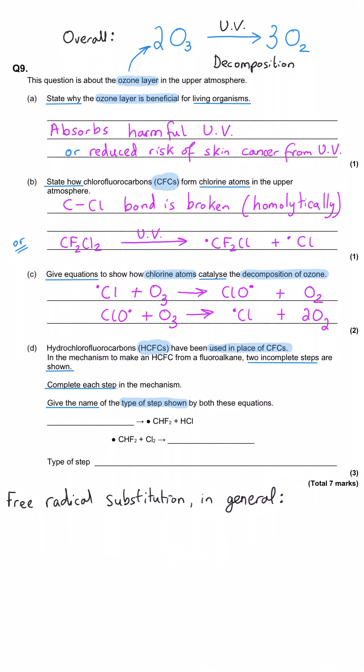And so actually, we should probably start with the type of step because you can see that we've got something in the reactants turning into some products which have got a free radical and then free radicals are the reactants down here and then they're turning into some products.